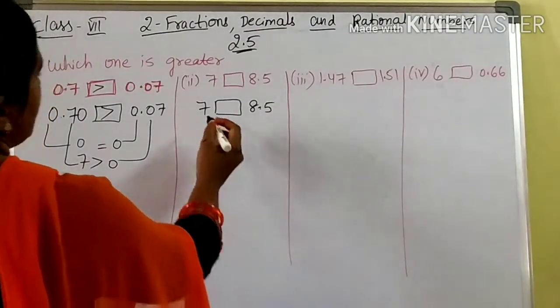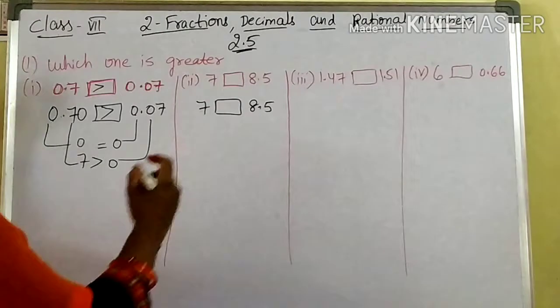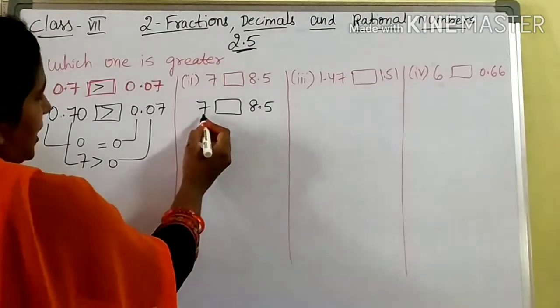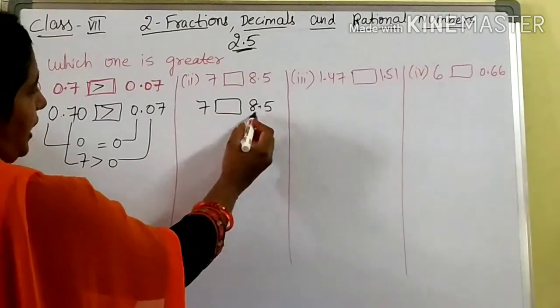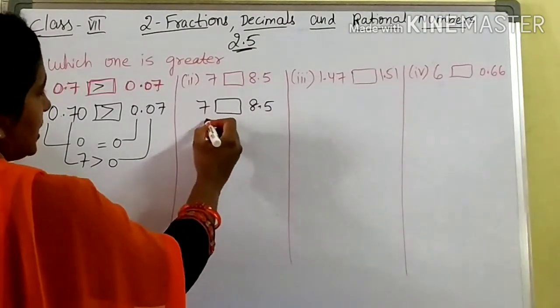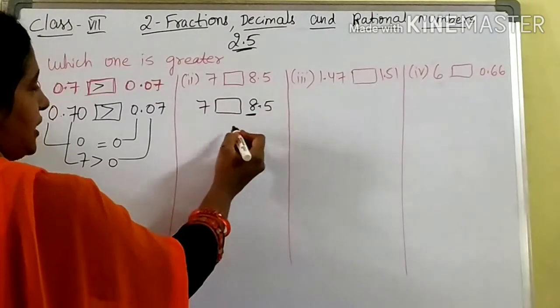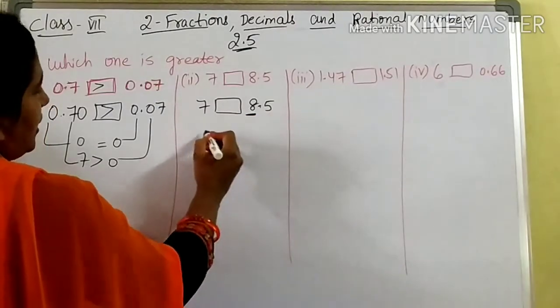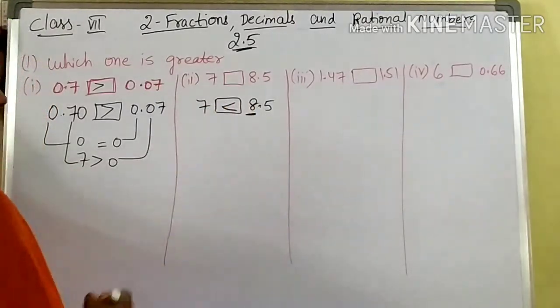Coming to the second one: 7 and 8.5. What is the whole part here? 7. Here, 8. Which is greater? 8 is greater. Then 8.5 is greater.